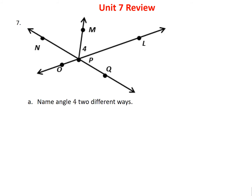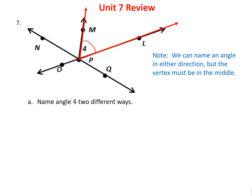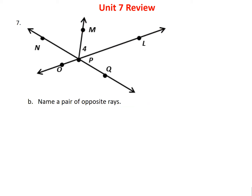Problem 7A asks us to name angle four in two ways. Angle four sits at vertex P, and we can name it in either direction as long as the vertex is in the middle. So I can name it MPL — start at M, come to P, go to L — or I can name it LPM going the other direction.